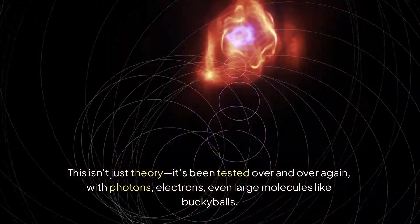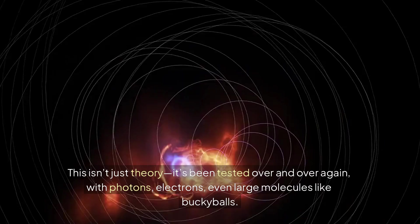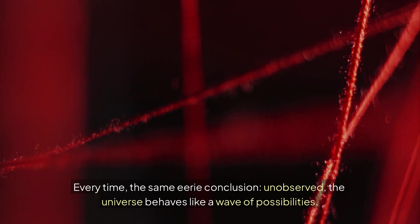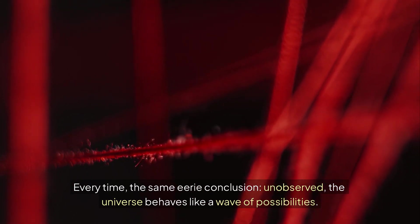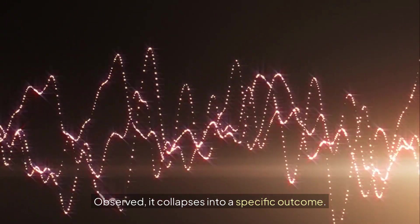This isn't just theory. It's been tested over and over again with photons, electrons, even large molecules like buckyballs. Every time, the same eerie conclusion. Unobserved, the universe behaves like a wave of possibilities. Observed, it collapses into a specific outcome. So what does that mean for reality?